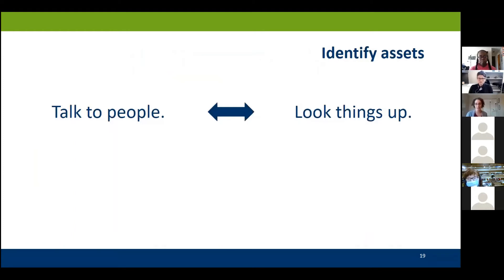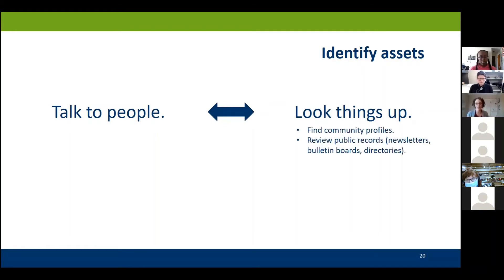The next part is about identifying assets. Here's where the road diverges into either talking to people or looking things up. Looking things up works if you are trying to identify assets that are a little higher level, like associations, institutions, or physical assets, because those are things you can look up through directories. People may have already done some of this work — looking at demographics of a neighborhood and the resources that are there. The nature of the group, if it's a formal group, tells you what their strength or capacity might be.